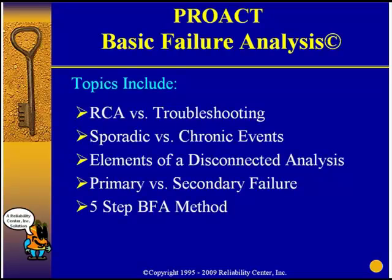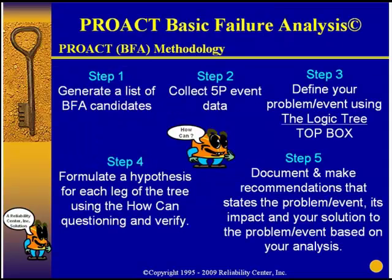The five-step basic failure analysis method is very simple. First, we have to generate a list of BFA candidates — usually people use triggers for that. Once we know what we're going to work on, we go out and collect 5P data, because you need data to solve problems. The five P's are: parts, position, people, paradigms, and paper. Under those five categories, if we take them as a guideline, we'll be able to collect all the data we need to solve any problem.